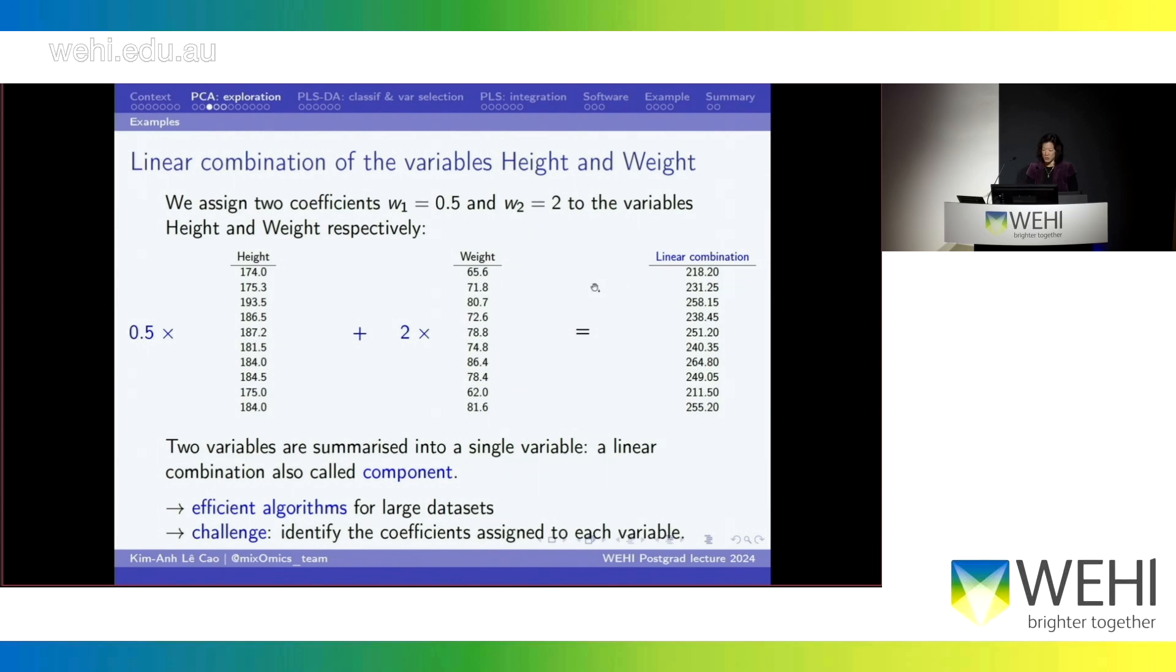This is basic algebra. And you get a linear combination where for each individual, instead of having two values, you end up with only one because you've combined them with those coefficients. And so this linear combination is a component. So you can do that very efficiently now. We have algorithm in R and other languages to do that. But really, the challenge is that how do you define what is the coefficient you assign? How do you decide that?